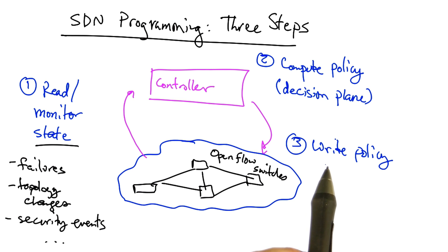The third step is to write policy back to the switches by installing the appropriate flow table state into the switches.